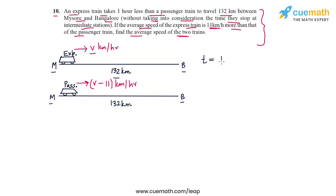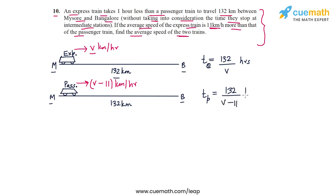The express train will take a total time of 132 divided by v hours, and the passenger train will take 132 divided by (v minus 11) hours. We know that the express train takes one hour less than the passenger train, so this information can now be used to write an equation in v.